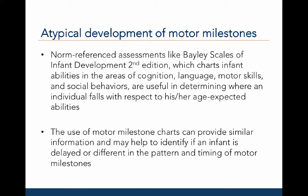We can use norm-referenced assessments like the Bailey Scales of Infant Development, 2nd edition, which charts an infant's abilities in the areas of cognition, language, motor, and social behaviors with respect to an infant's age-expected abilities. This type of assessment is useful in determining if an infant falls below his or her age-expected abilities and whether or not an intervention is necessary.